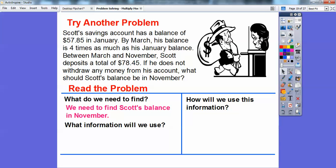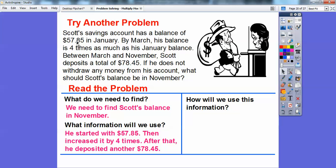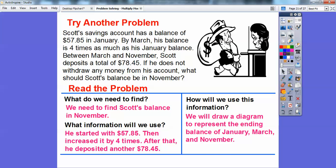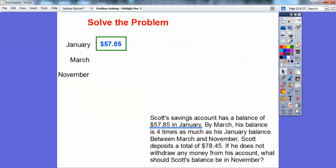What information are we going to use? Well, we know that he started with that $57.85, and then by March, his balance increased by four times that. And then after that, he deposits an additional $78.45. So how are we going to use this information? We're going to draw a diagram to represent the ending balance of January, March, and November.